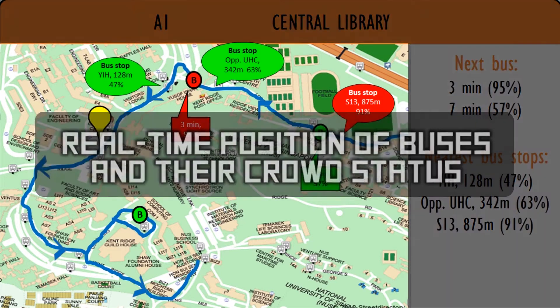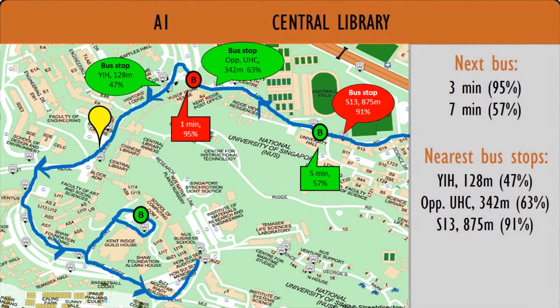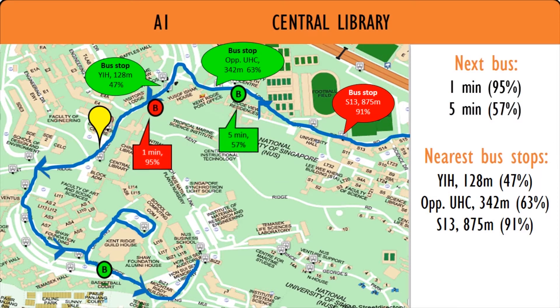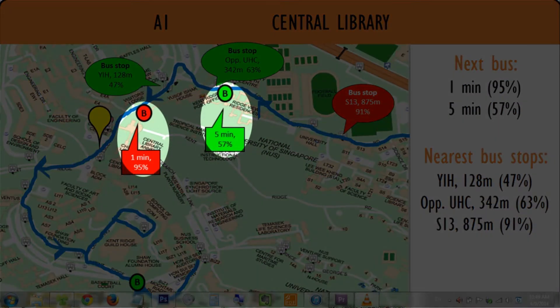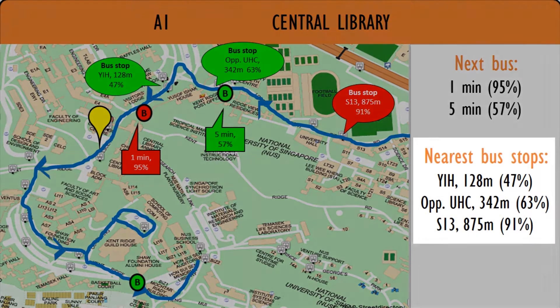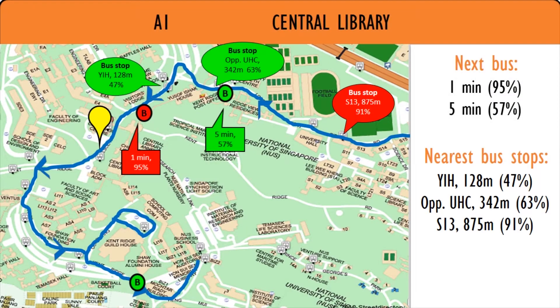Firstly, the app shows the nearby map based on the GPS location of the user. Next, it will indicate the position of the next bus of interest on the map, along with a percentage of how full that bus is. Lastly, it can also list out the crowd level information for all other nearby bus stops, to allow users to see the least crowded bus stops.